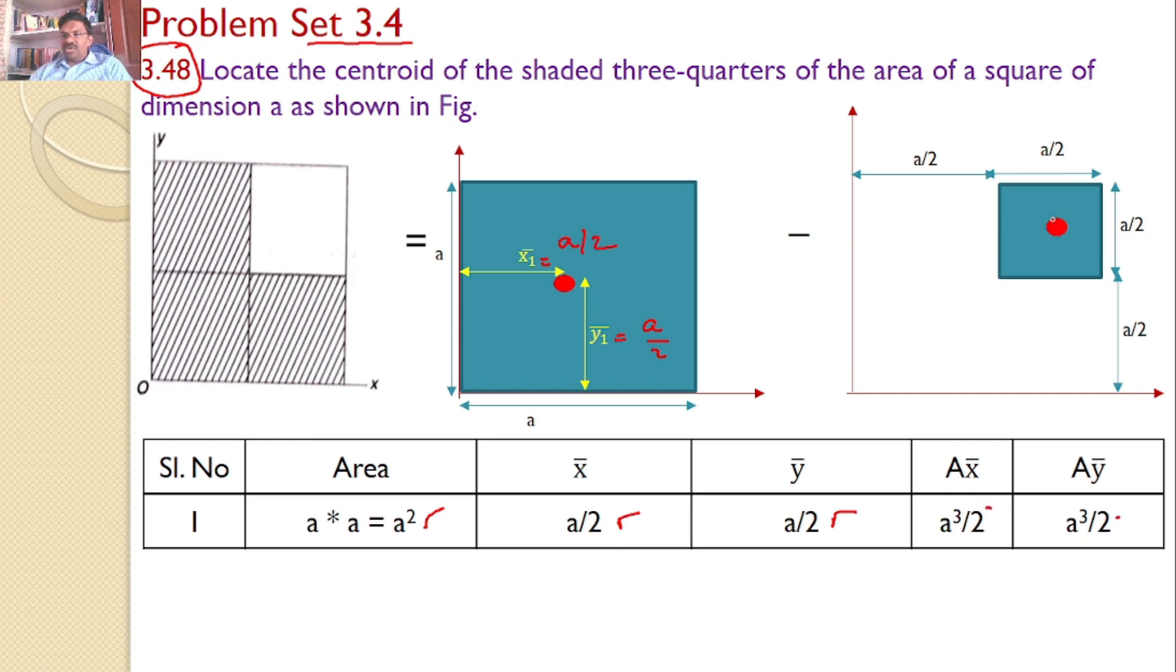This is for area 2. This is the centroid. This distance is X2 bar and this distance is Y2 bar. How much is this distance? The total is A by 2, so this distance equals A by 4. This distance also equals A by 4. What is X2 bar? X2 bar equals A by 2 plus A by 4, which is 3A by 4. Y2 bar also equals 3A by 4. What about the area?